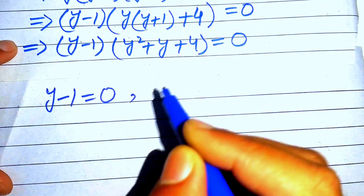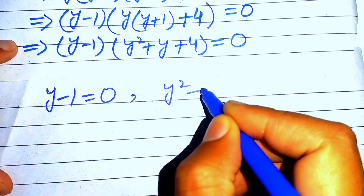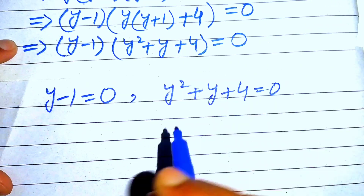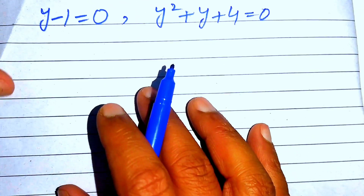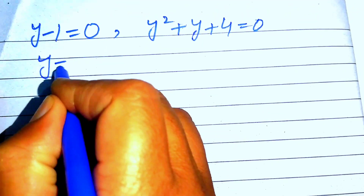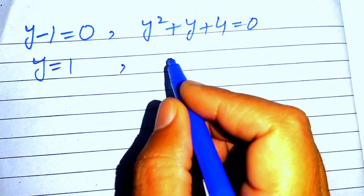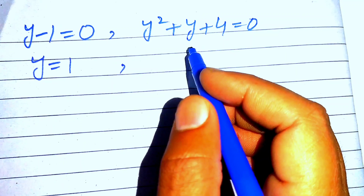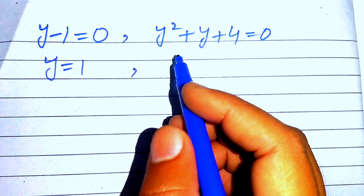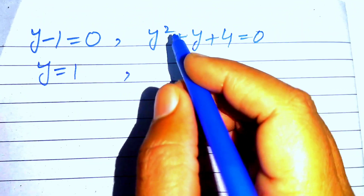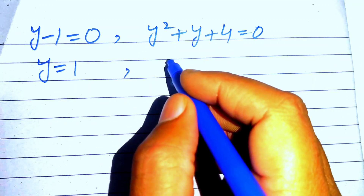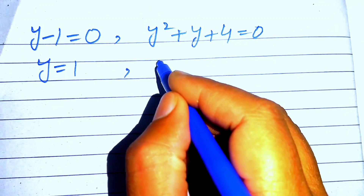We split into two cases: Case 1: y − 1 = 0, giving y = 1. Case 2: y² + y + 4 = 0. We check whether Case 2 has real roots using the discriminant formula.